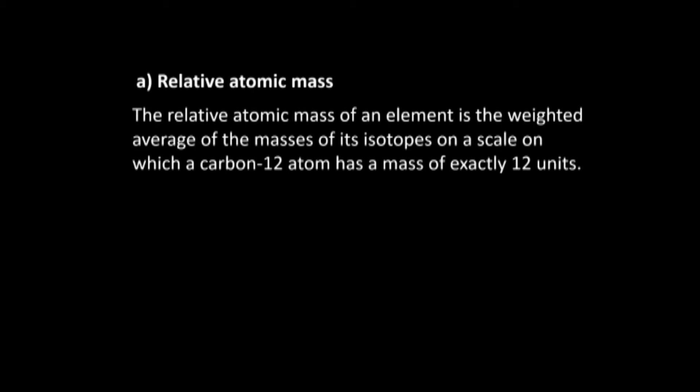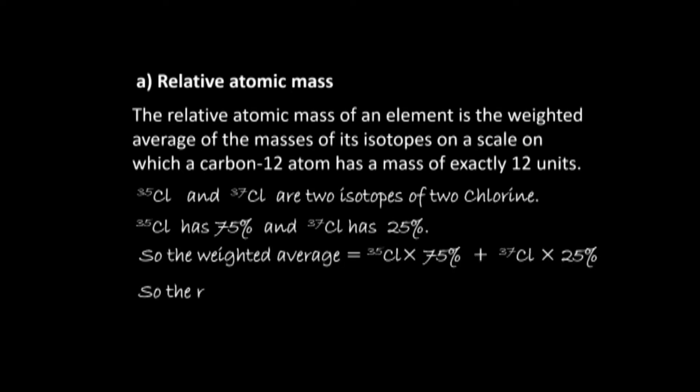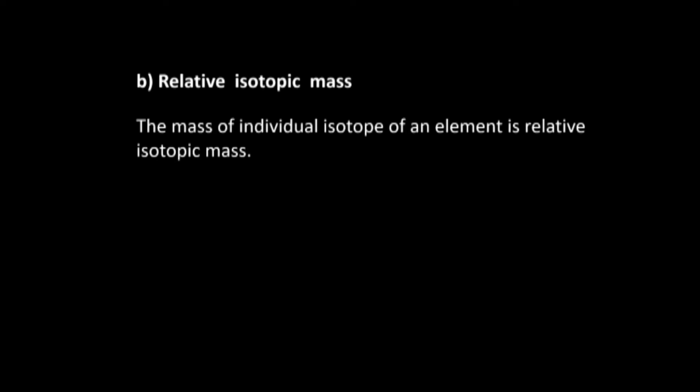Relative atomic mass: the relative atomic mass of an element is the weighted average of the masses of its isotopes on a scale on which the carbon-12 atom has a mass of exactly 12 units. For example, chlorine-35 and chlorine-37 are isotopes of chlorine. Chlorine-35 has 75% abundance and chlorine-37 has 25%, so the weighted average is 35.5.